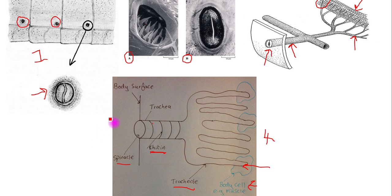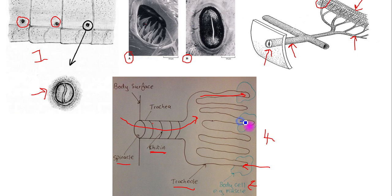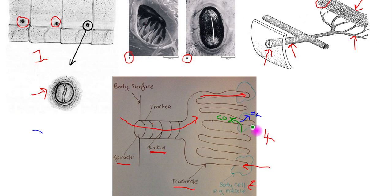Once the spiracle is open, air can enter the tracheal system and travel right down to the ends of the tracheoles, where gas exchange occurs. Oxygen diffuses into the cells of the insect, and once the oxygen has been used in respiration, carbon dioxide leaves the cell and enters the tracheole. This is where all the gas exchange occurs in the insect.